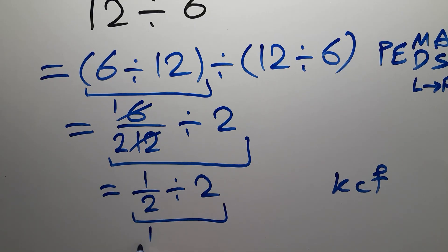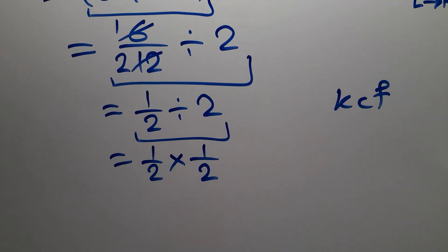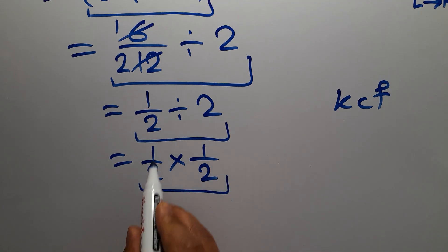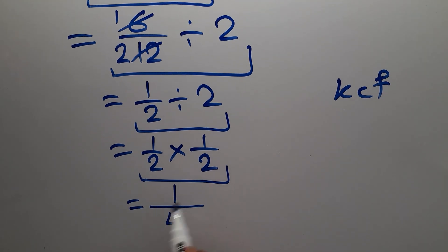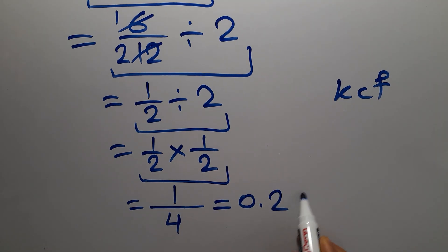We can write 1 over 2 times 1 over 2. 1 over 2 times 1 over 2, and this is equal to 1 times 1 gives us 1, and 2 times 2 gives us 4. 1 over 4, and this is our final answer to this problem: 1 over 4 or 0.25.